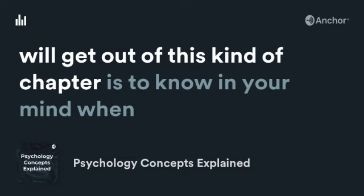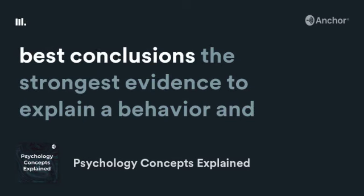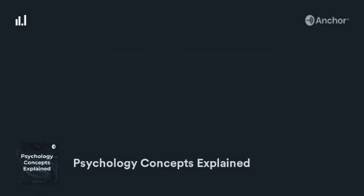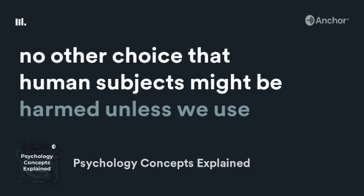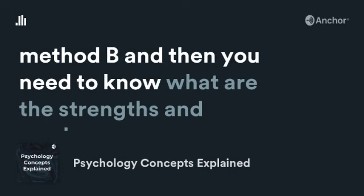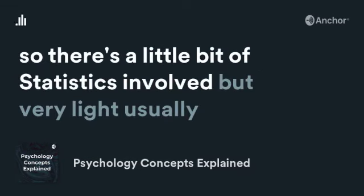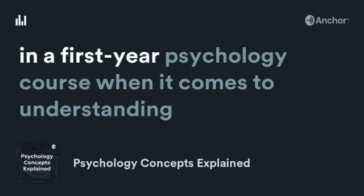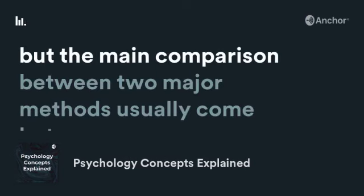So depending on how data is collected, the quality of the method will vary. One thing you'll get out of this kind of chapter is knowing which method gives you the best conclusions and the strongest evidence to explain a behavior, and understanding when a method was chosen because there was no other choice — perhaps because human subjects might be harmed otherwise. You need to know the strengths and weaknesses of each method. There's a little statistics involved, but very light, in a first-year psychology course. The main comparison usually comes between the correlational method and the experimental method, which will be explained later.